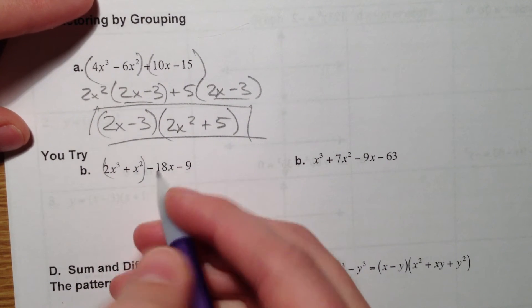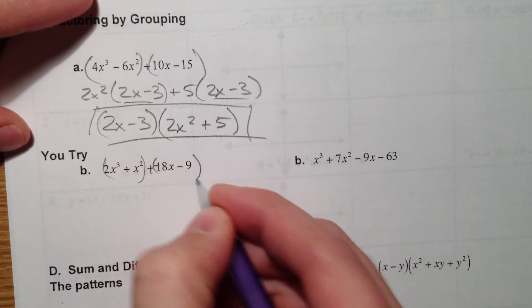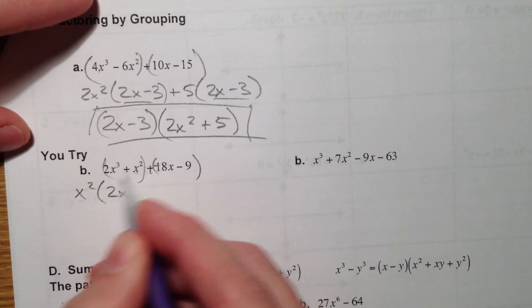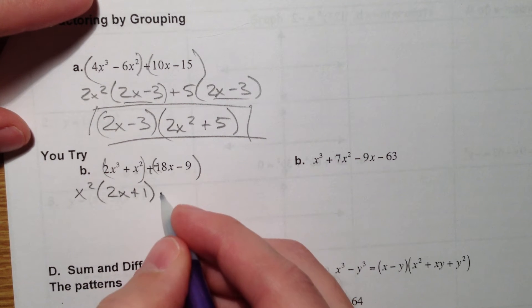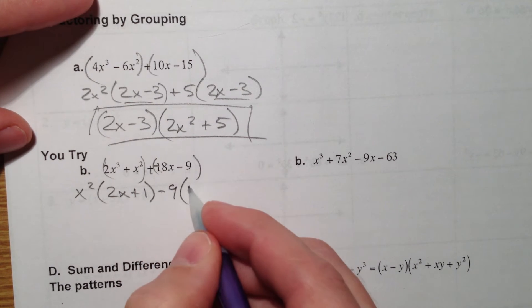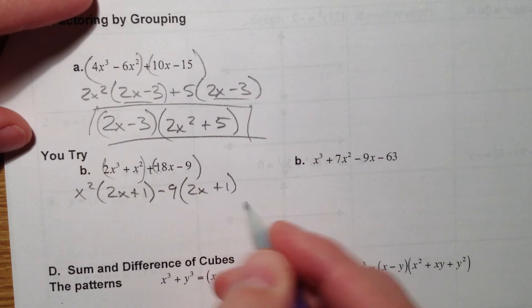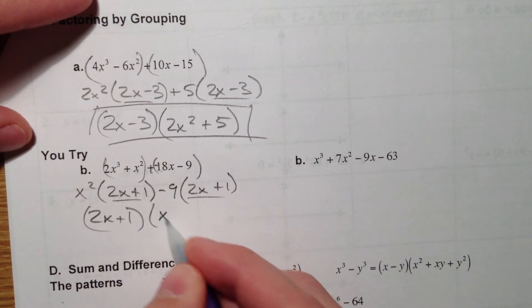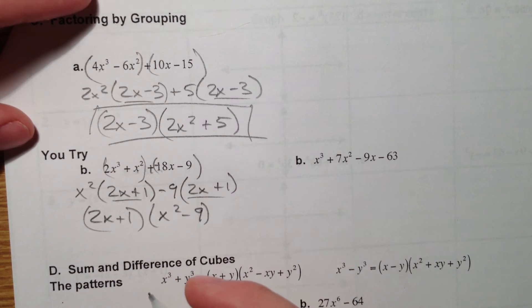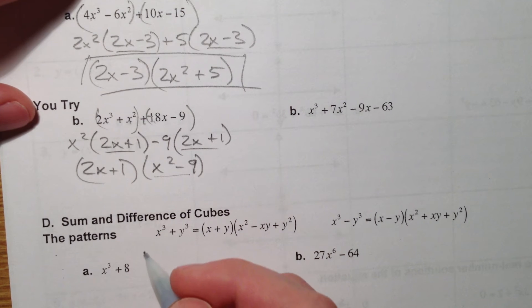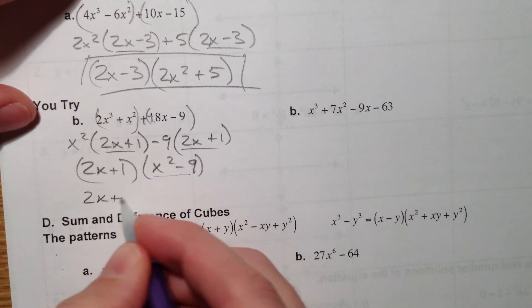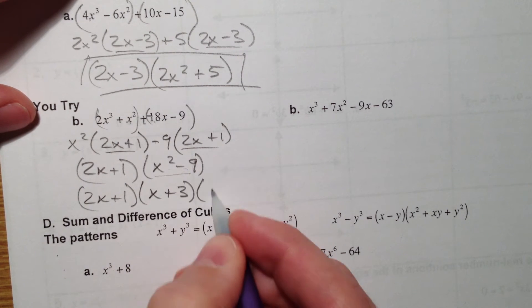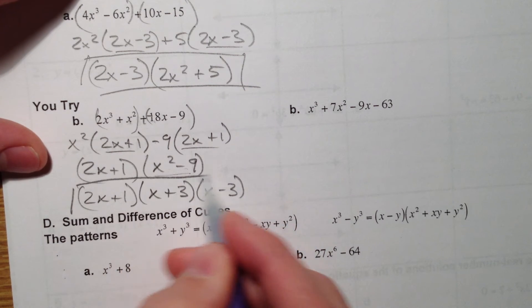Alright. Next one. Group. Again, I'm going to suck in the negative here. Pull out an x². That leaves 2x. x² divided by x² is 1. Pull out a negative 9. Leaves a positive 2x + 1. 2x + 1 is what they have in common. Alright. So the most common error here is that we leave this alone. x² - 9 is that special type of factoring. Call it the difference of squares. So x + 3, x - 3. Factor it one more time. Anytime you have the two terms, something squared minus something squared.